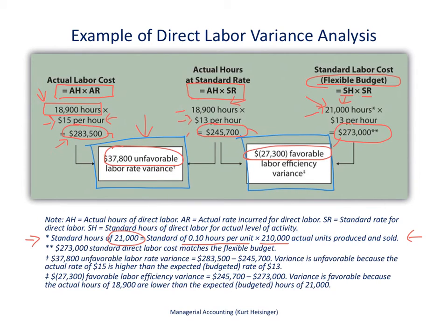Going from left to right, we've compared the actual direct labor costs with our flexible budget, and the difference is shown in two variances. We had an unfavorable rate variance of $37,800 — we paid $2 per hour more than expected. And we have a favorable labor efficiency variance of $27,300, because our employees worked fewer hours than expected.